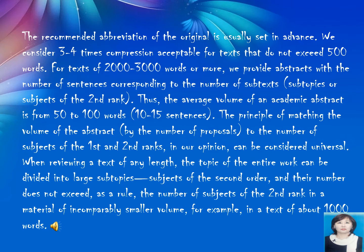We consider three or four times compression acceptable for texts that do not exceed 500 words. For texts of 2000 to 3000 words or more, we provide abstracts with the number of sentences corresponding to the number of subtexts, subtopics or subjects of the second rank. Thus, the standard volume of an academic abstract is from 50 to 100 words, or 10 to 15 sentences.